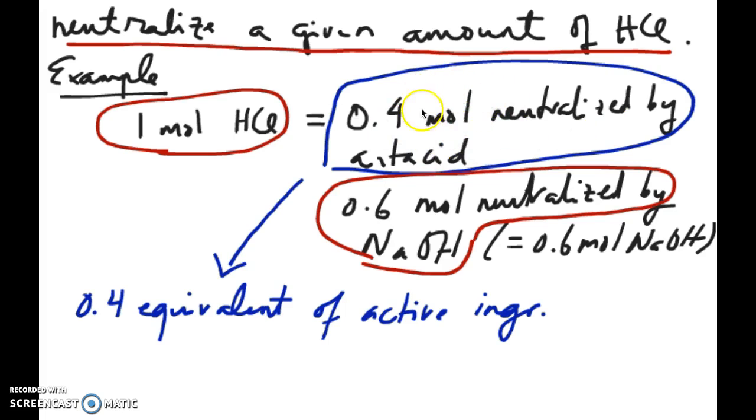Now I know that that 0.4 moles of HCl is neutralized not just by one base but by two or three different weak bases that are present in my antacid. So instead of saying 0.4 moles of antacid I would say that there's 0.4 equivalent of active ingredient in the antacid.